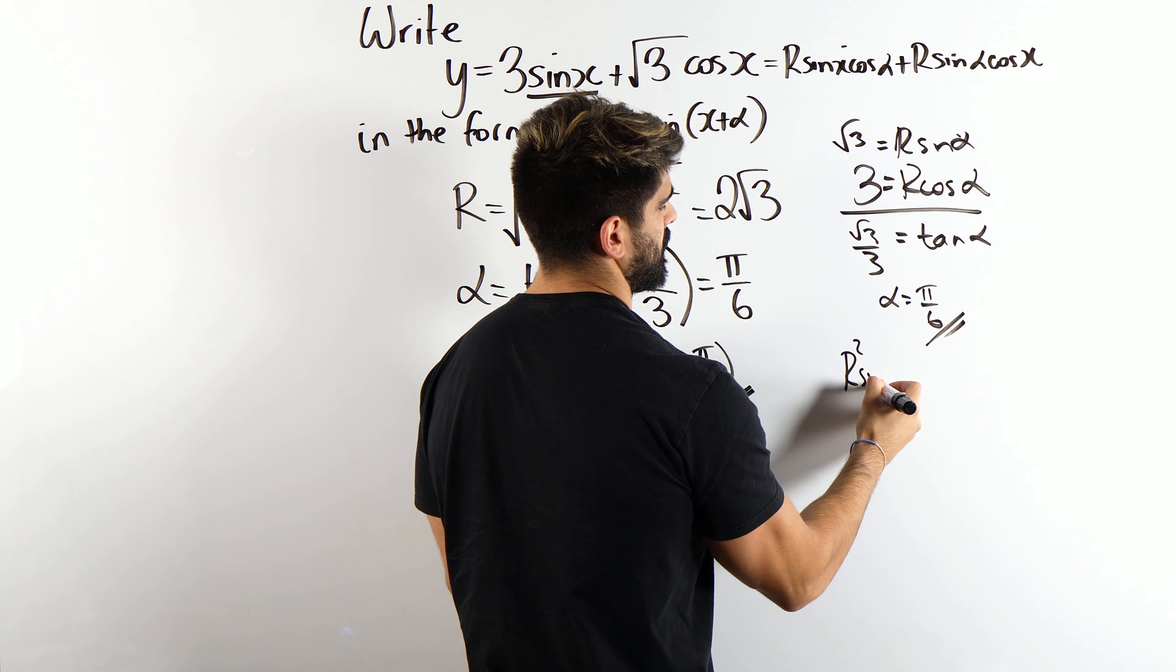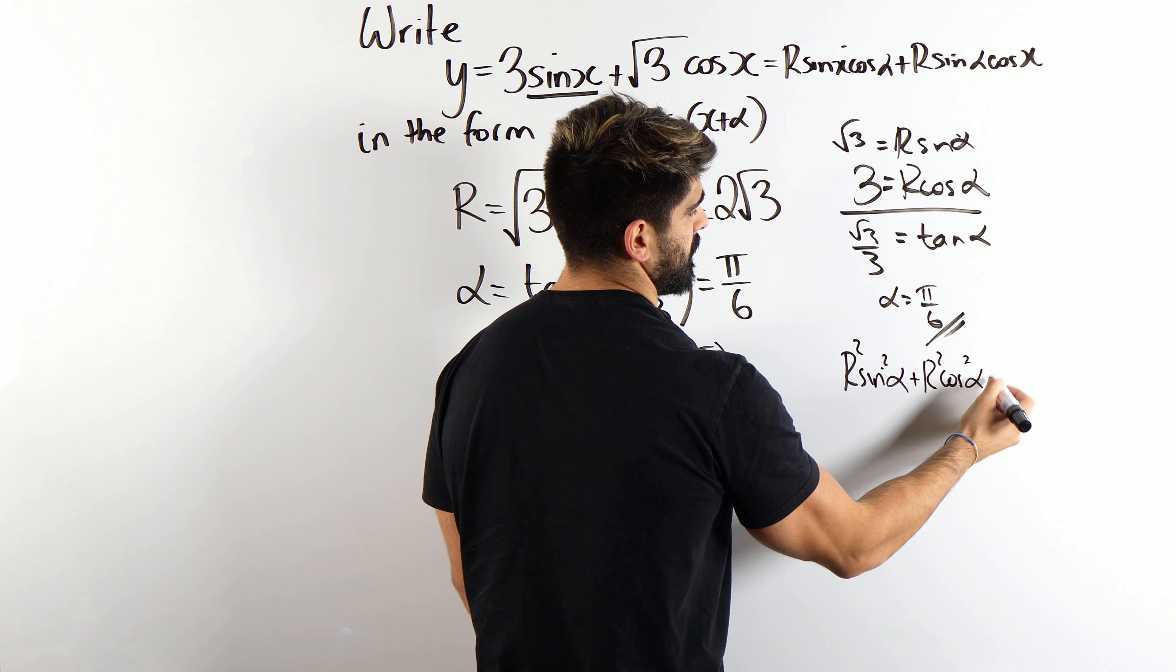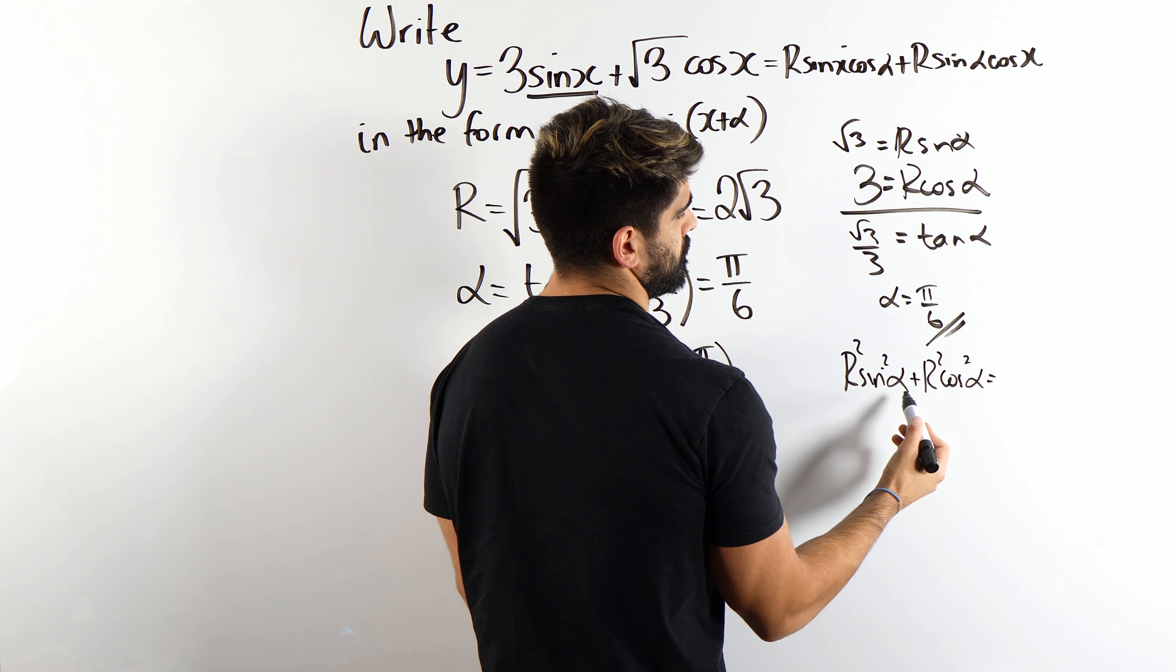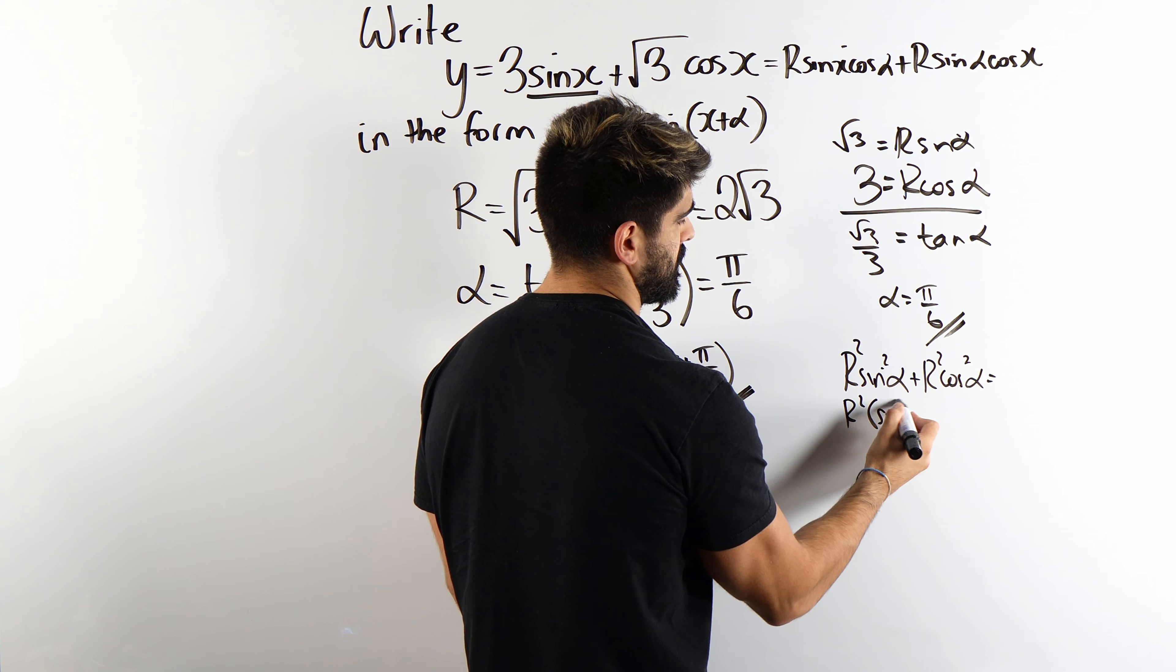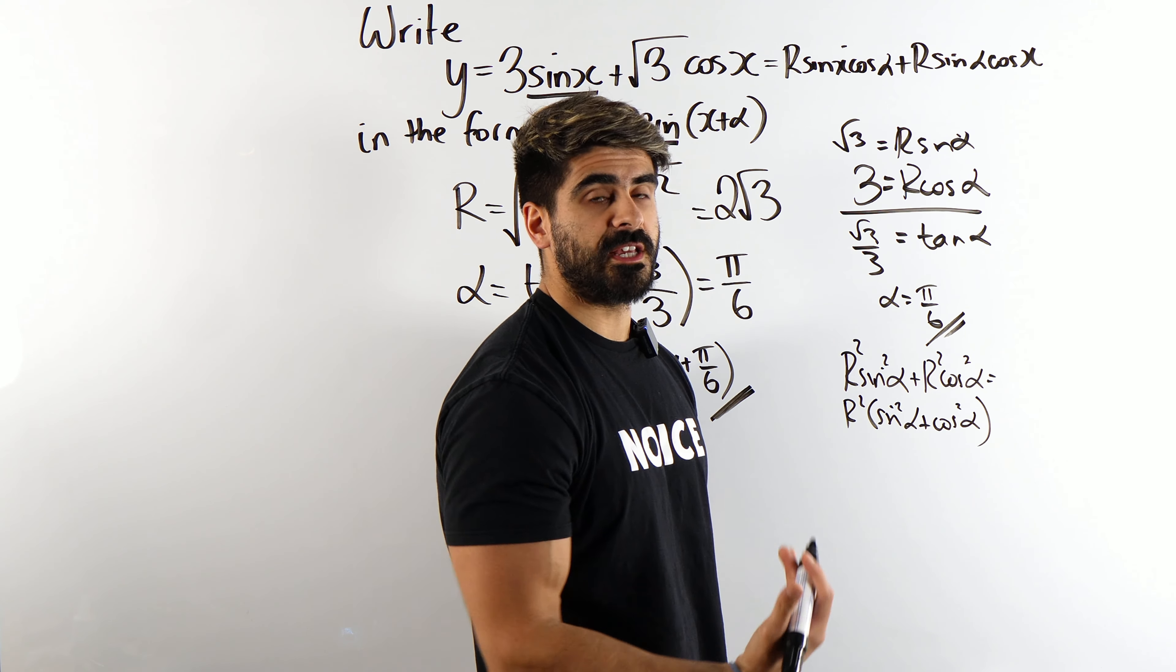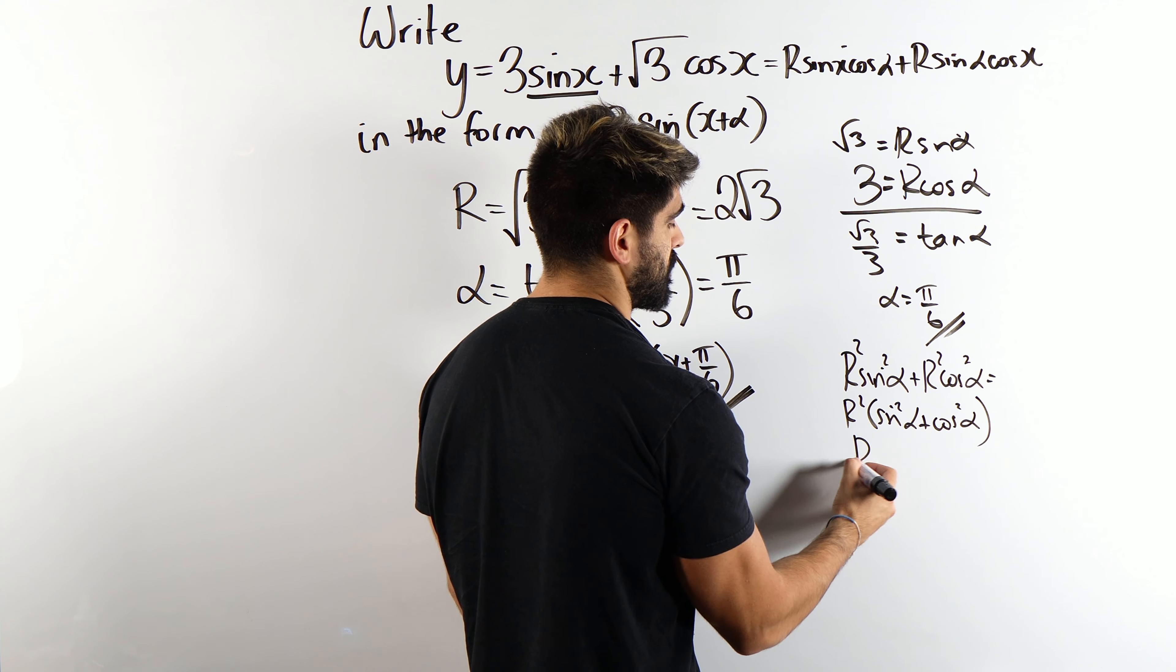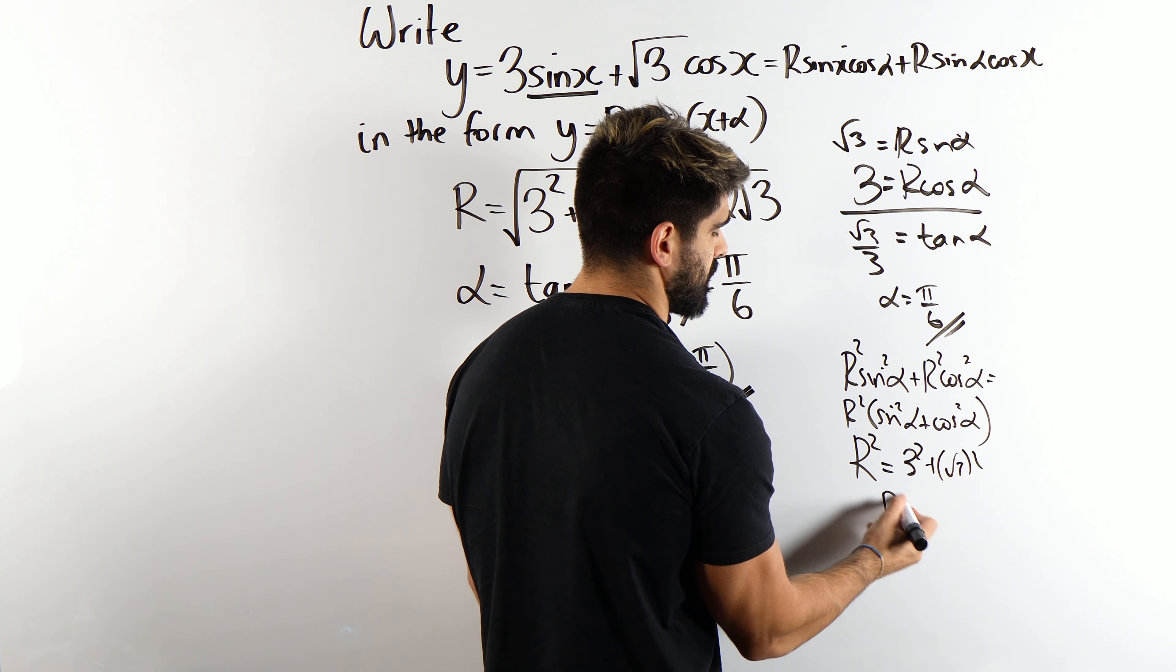You square these two. R squared sin squared alpha plus R squared cos squared alpha is, well you could write like this first. That gives you R squared sin squared plus cos squared. See I'm yawning inside by the way, showing you guys this. That just leaves you R squared. Here's your 3 squared plus root 3 squared. And then you root it.